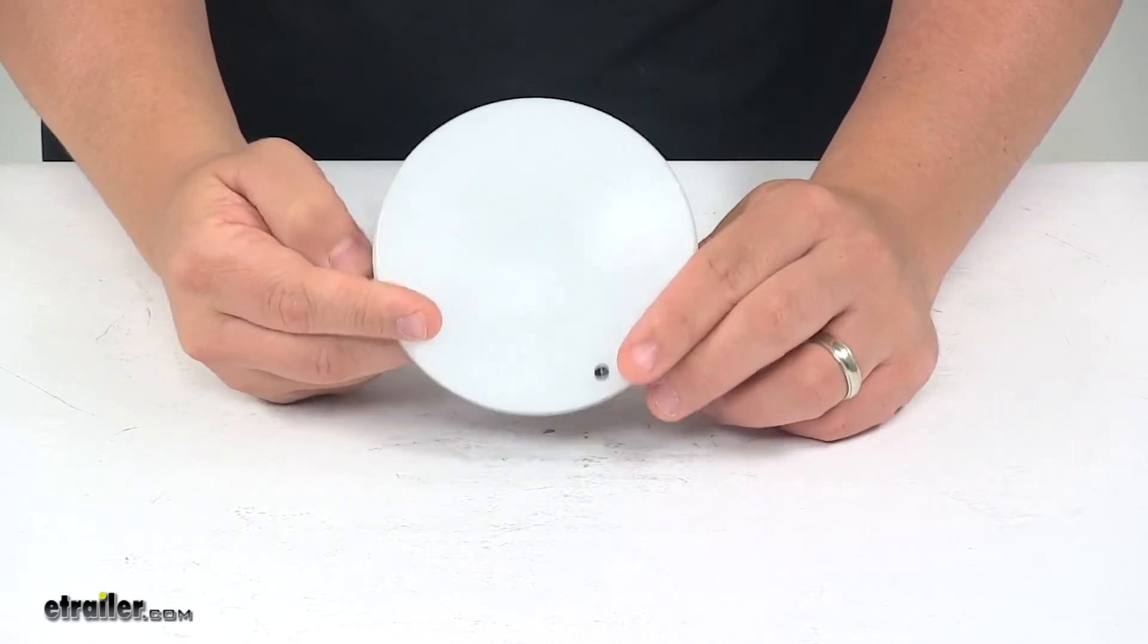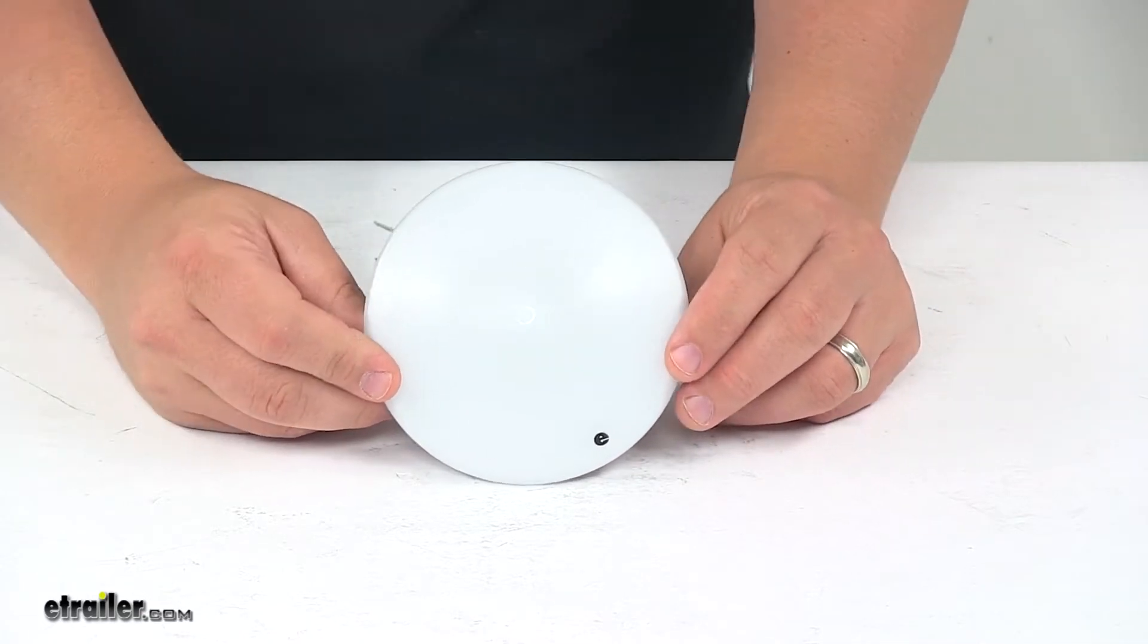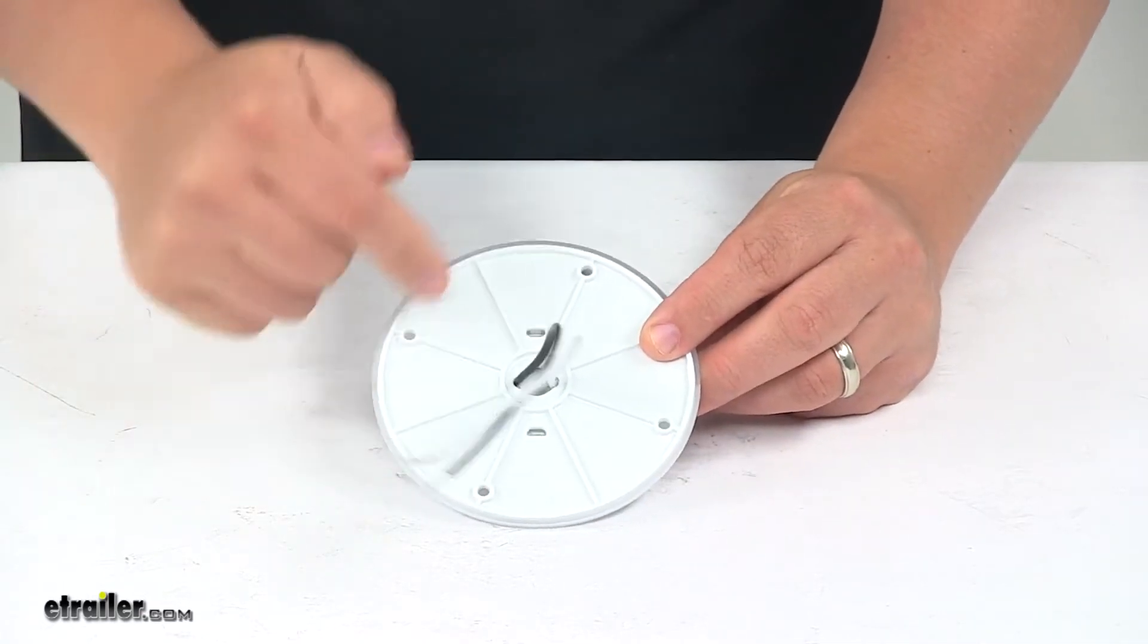It's a surface mount installation, so there's no cutouts required. Mounting hardware not included, but it does have the four pre-drilled mount holes.